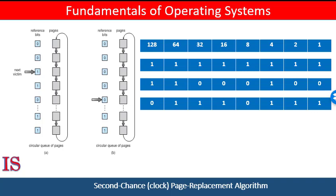If the shift register contains all zeroes, the page has not been used for 8 time periods. A page used at least once in each period would have a shift register of all ones. A page with a history register of 11000100 would have been used more recently than one with the value 01110111. If we interpret these 8-bit bytes as unsigned integers, the page with the lowest number is the least recently used page and can be replaced. To convert, recall from earlier courses the process of converting a binary number to a decimal integer, where position values range from 1 (lowest order) to 128 (highest order), doubling across.